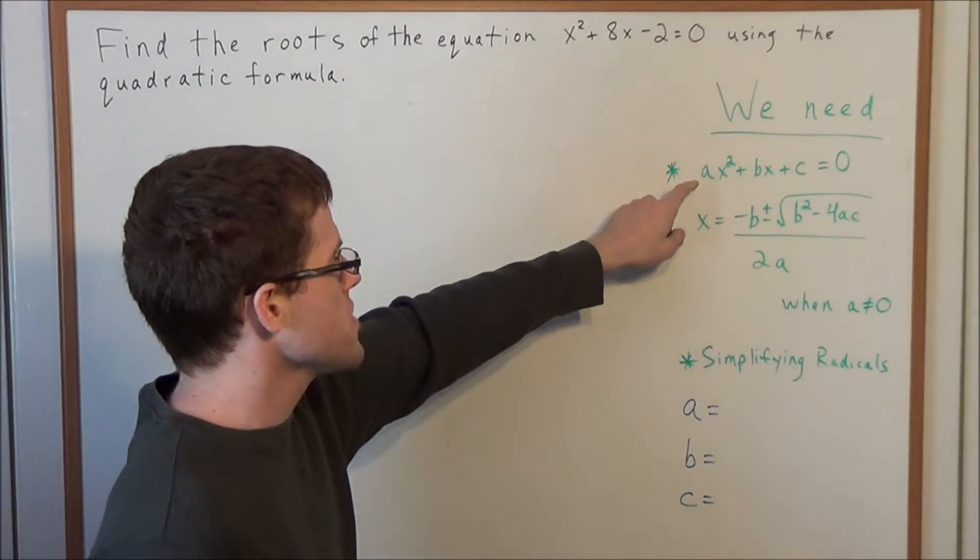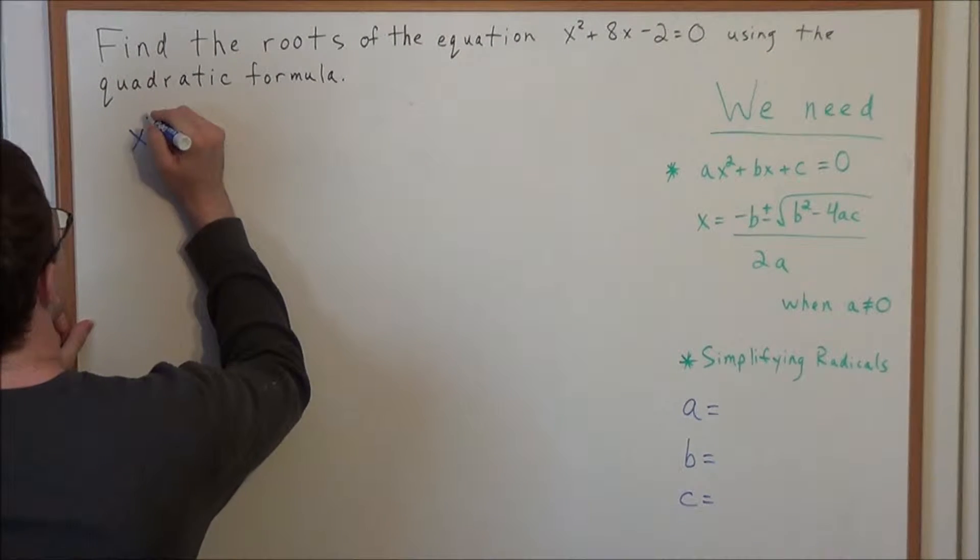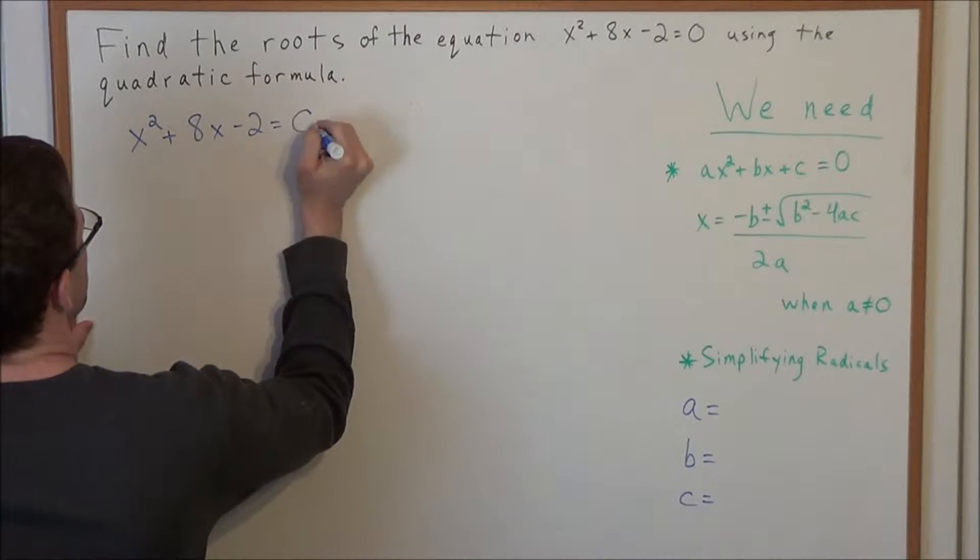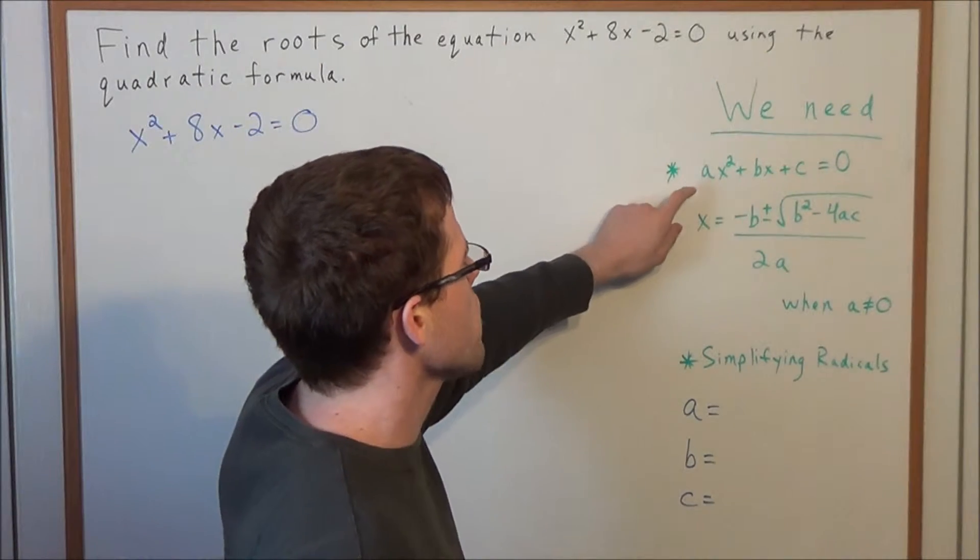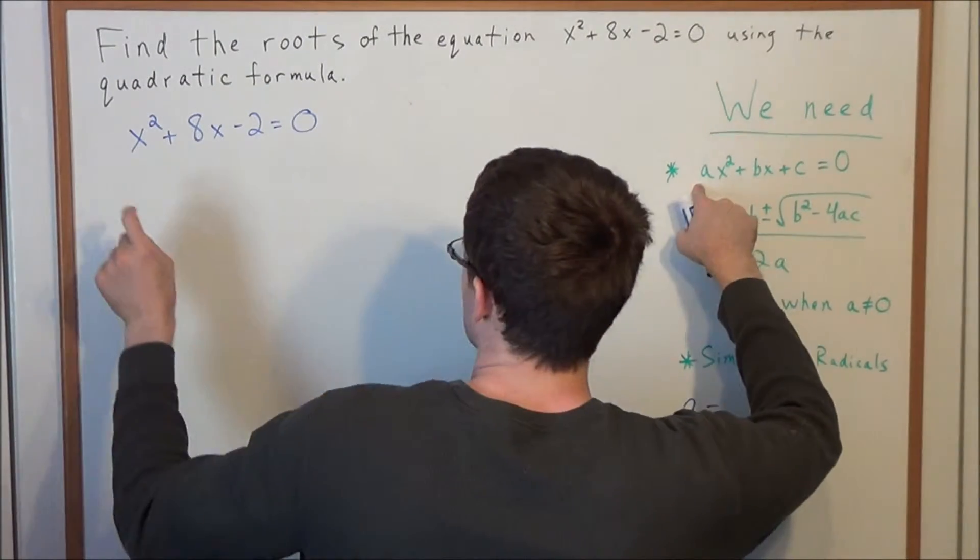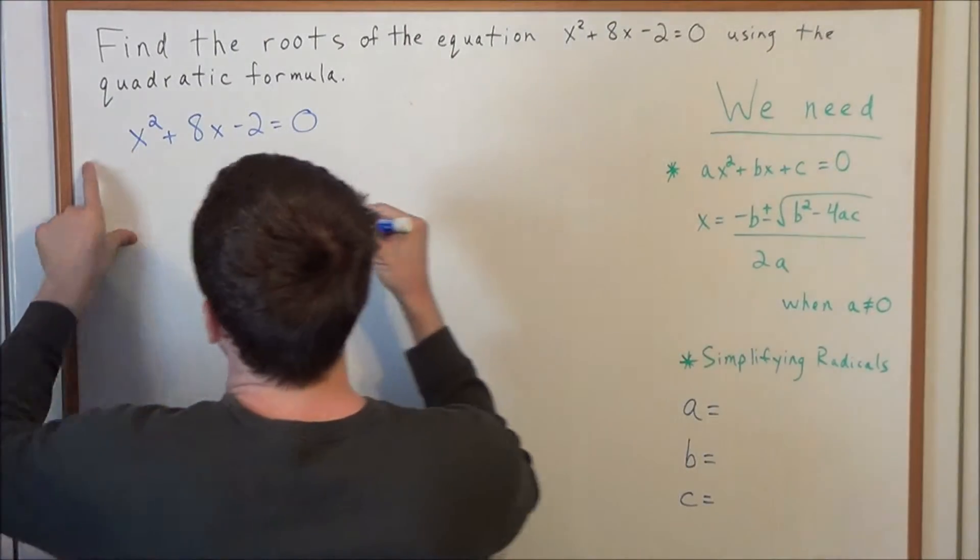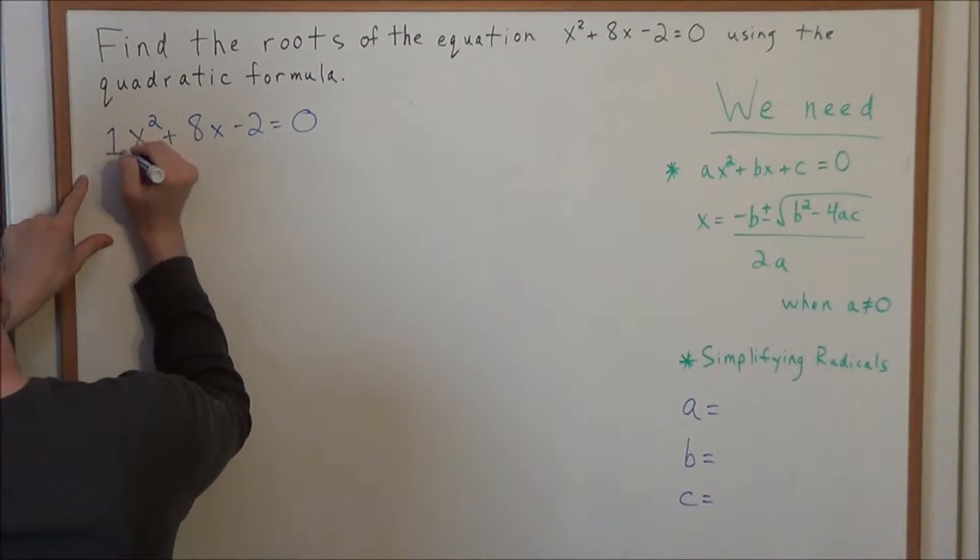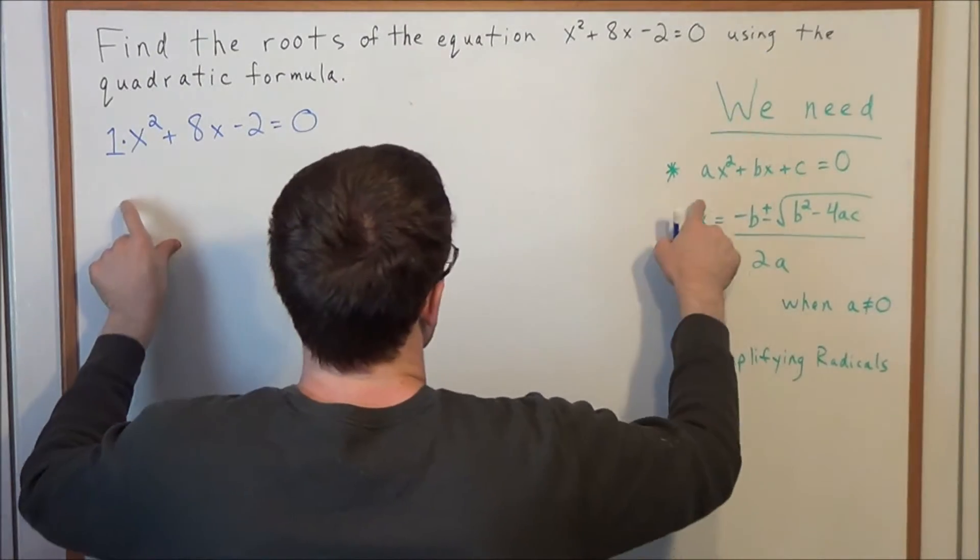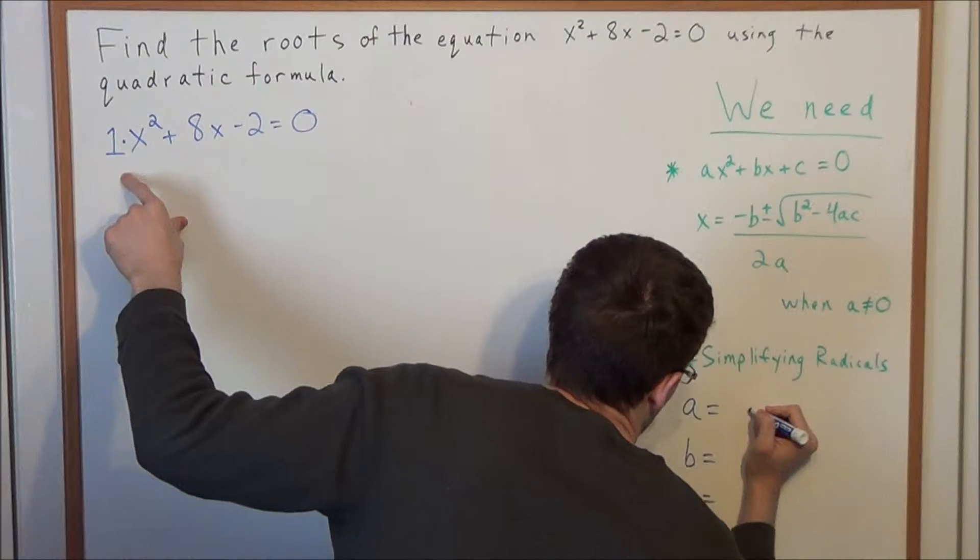The way that we would find these a, b, and c values, if we're looking at x² + 8x - 2 = 0, is we look for the coefficients in front of each term. For instance, we're looking at the coefficient of the x² term to find the corresponding a value. And if there's no number written there, it's implied to be a 1 because 1 times x² equals x². So the coefficient in front of the x² term in this case gives us a = 1.